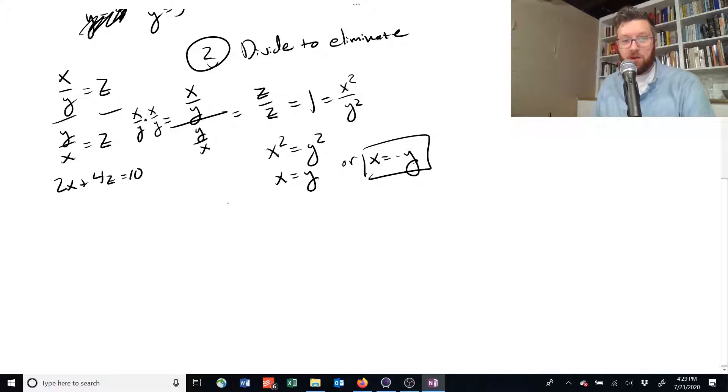Once we know that x is equal to y, we can go back to our first equation. And we can see that that must mean that z is equal to 1. Because x divided by x is equal to z, and z is equal to 1. Or x divided by x, which we could substitute out y here, would be equal to 1. And that tells us z is equal to 1. So we've got our first equation here.